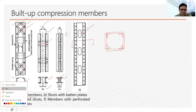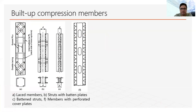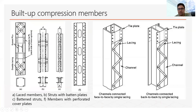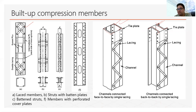Now I will show the isometric view of the more popular built-up sections. In this case you can see the same built-up section in isometric view. They are called face-to-face connected — the sections are in this configuration. In the second case they are back-to-back, meaning their backs are connected. These configurations are very common when we need to support a large load. For heavy loads we use the face-to-face configuration, and for lighter loads the back-to-back type.